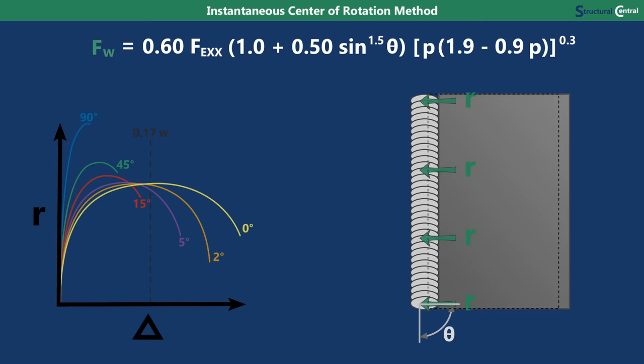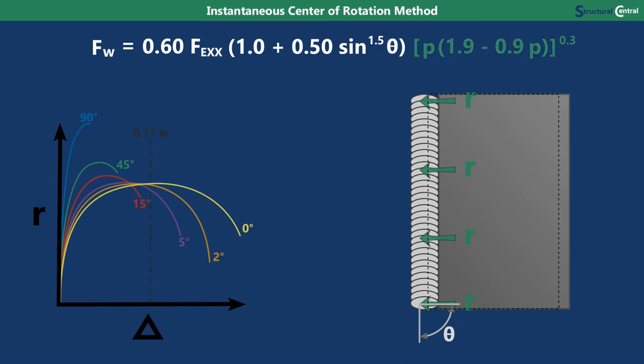The stress in a weld FW is equal to this term, which is the strength of a fillet weld including the adjustment for the angle between the load and the weld theta, times this term, which is a formula for a parabola, which will result in some value between 0 and 1 depending on the value P. P is the deformation of the weld delta divided by the deformation that results in the maximum reaction, delta M. A p-value less than 1 means the weld has not yet reached its peak reaction, and a p-value greater than 1 means it has already reached the peak and its reaction is starting to decrease. Since this method uses nonlinear equations, superposition is not permitted.